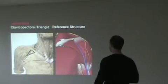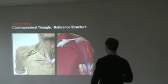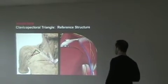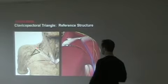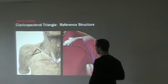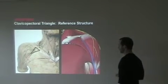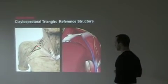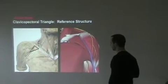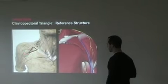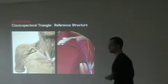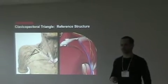The clavicle pectoral triangle is going to consist of the clavicle, anterior fibers of the deltoid, as well as the clavicular head of pectoralis major.